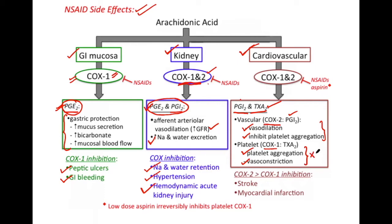Inhibition of thromboxane A2 does not cause much adverse effect on the cardiovascular system. Rather, it has a beneficial effect in coronary artery disease, because the platelet aggregation and vasoconstriction caused by thromboxane A2 won't be able to take place.